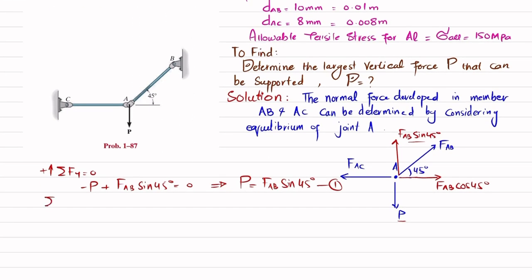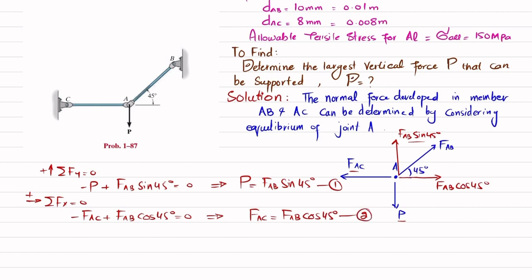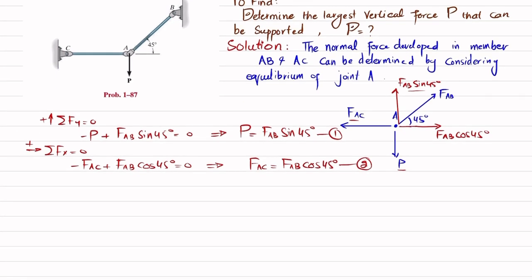Applying the second equation of equilibrium at joint A, the sum of all forces along the x-direction must equal zero, with rightward forces taken as positive. F_AC is in the negative direction, so: F_AC plus F_AB cosine 45 degrees equals zero, which gives F_AC equals F_AB cosine 45 degrees. This is equation number two.